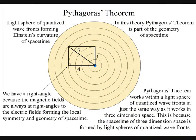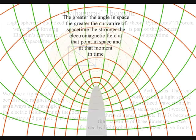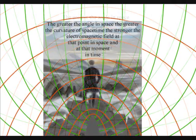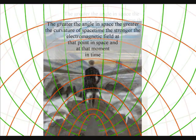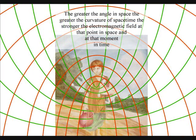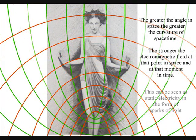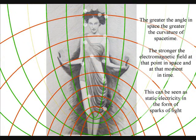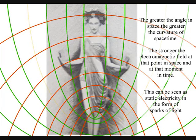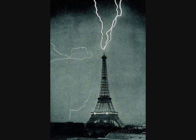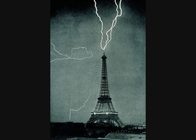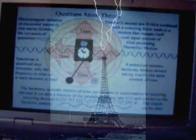The magnetic fields are always at right angles to the electric fields, forming the local space-time symmetry and geometry. The greater the angle in space, the greater the curvature of space-time, the stronger the electromagnetic field at that point in space, and at that moment in time. This can be seen as sparks of light associated with static electricity. The atoms will even distort the geometry of space-time, creating electrostatic discharge in the form of lightning.